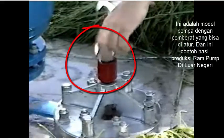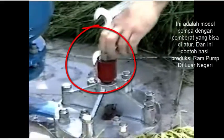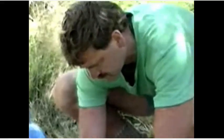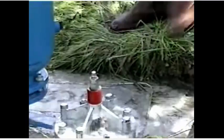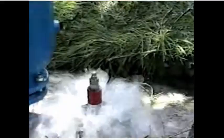Lengthening the stroke will make the pump cycle more slowly. This increases both the amount of water pumped and the amount of water used to drive the pump. Shortening the stroke has the opposite effect.